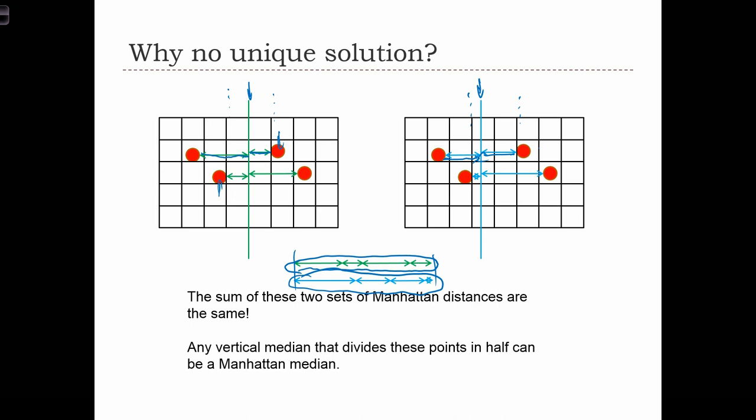In practice, what we would do in this case is find the point that perfectly divides this range of feasible medians. So we would find the halfway point between these two most inner points.